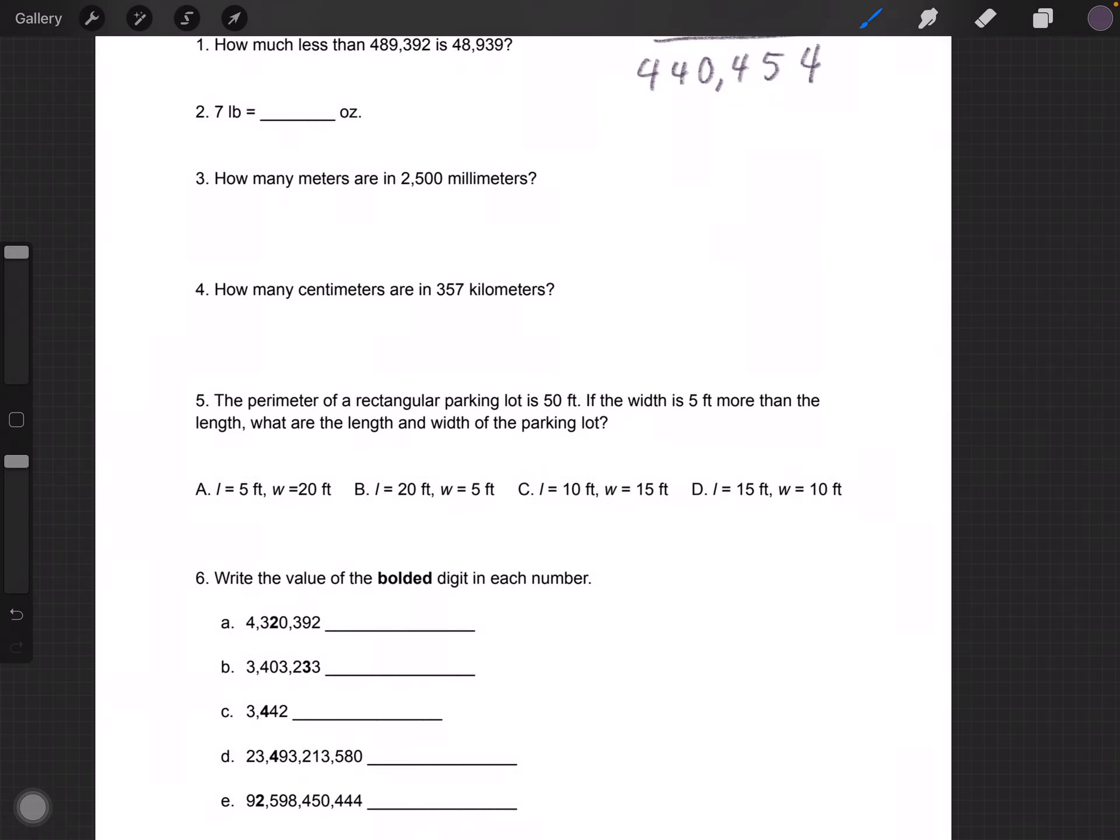Perimeter is all the sides added up together. If the width is 5 more than the length, what are the length and width of the parking lot? We know that the width is 5 more than the length. Looking at the answers, we can already cross out the ones where the width is less than the length, which is this one, and also this one.